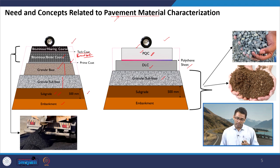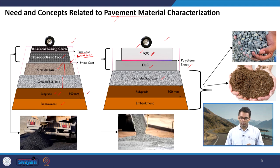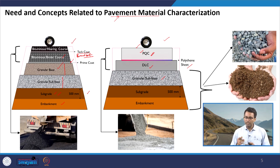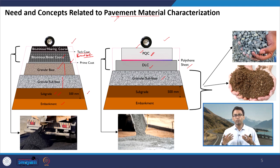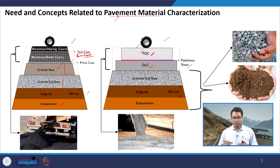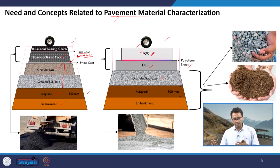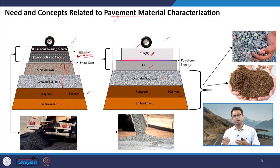In the concrete pavement, DLC and PQC are both made up of cementitious material. In DLC the amount of cement is considerably less compared to PQC, but we can think of both as a concrete mixture — cement, water, aggregate, sand, and other ingredients mixed together and then laid and compacted.